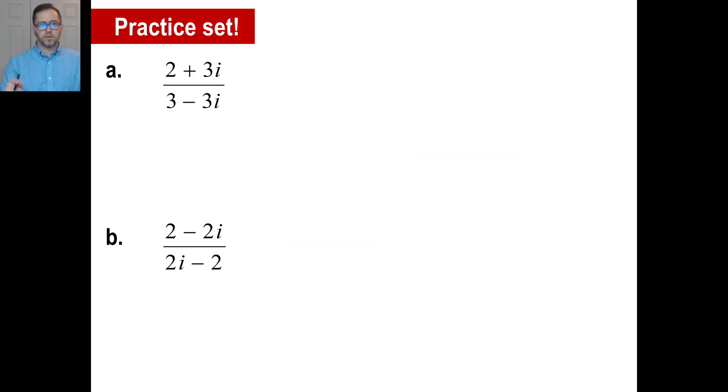Look at 81, look at your practice problems. And you're going to see something interesting happening with b. But try a first and pause it. Well, let's conjugate here. So 3 minus 3i and then 3 plus 3i. 2 times 3, 6. 2 times 3i is 6i.